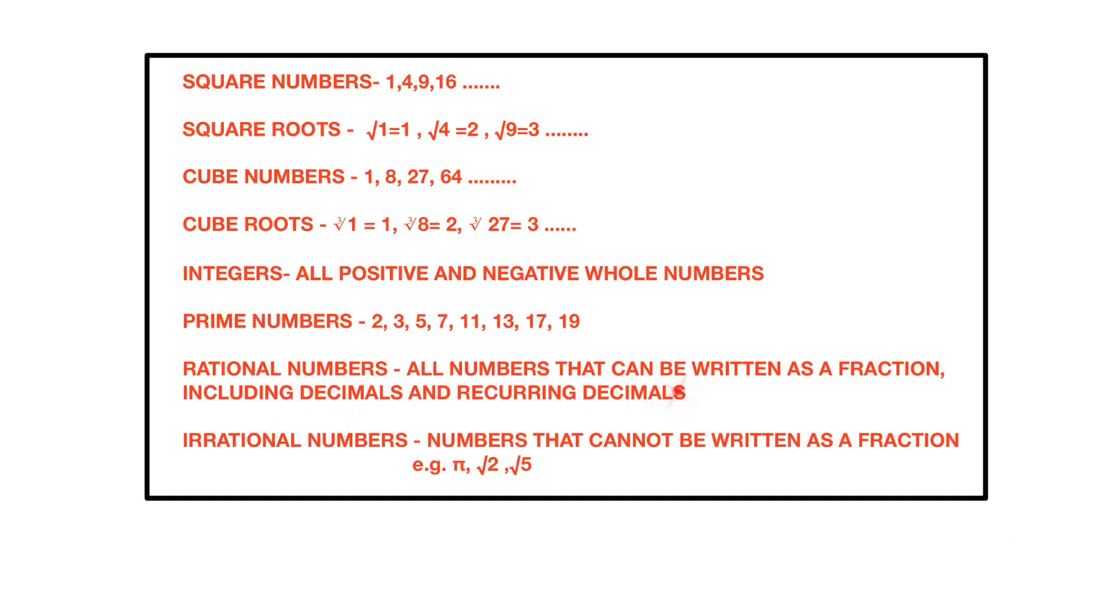Rational numbers are all numbers that can be written as a fraction, including decimals and recurring decimals. Irrational numbers are numbers that cannot be written as a fraction, example pi, square root 2, square root 5.